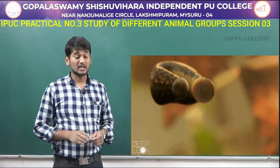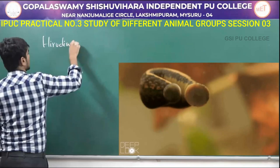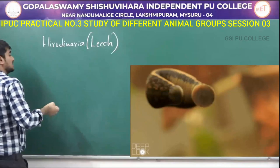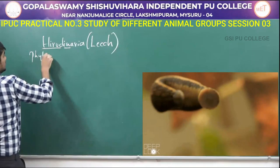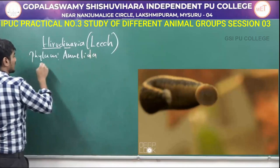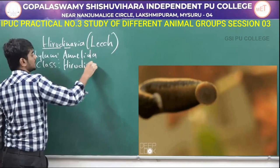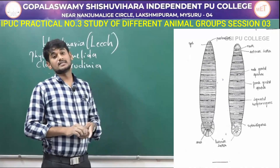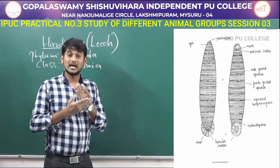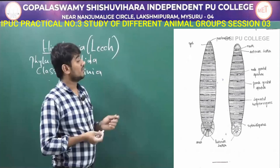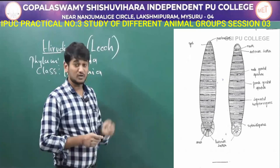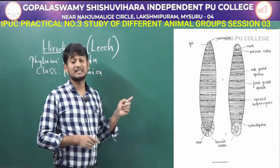The next one is Hirudinaria, commonly called as leech. Hirudinaria comes under the phylum Annelida and class Hirudinea. The body is dorsiventrally flattened and moist. The dorsal side is green in colour and the ventral side is yellow in colour. There is presence of an anterior sucker with a central mouth, and anus near the posterior sucker. The body is metamerically segmented with thirty-three segments, each segment having five annuli.